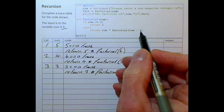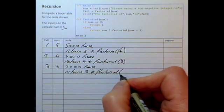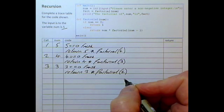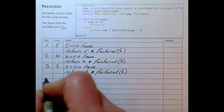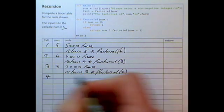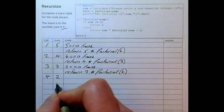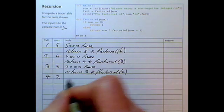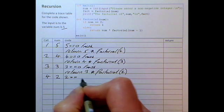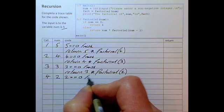Num is three, so the value of num minus one is two. This is our fourth call to the function. The parameter value for num is two. Two equal to zero is false.